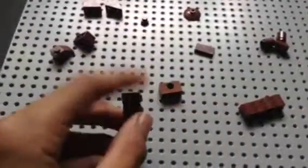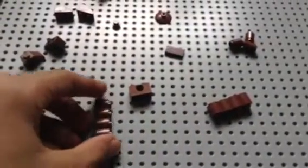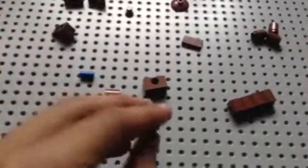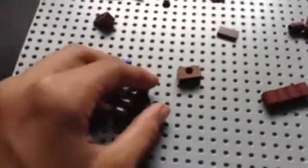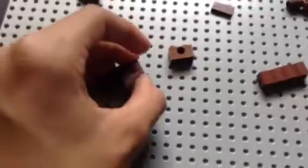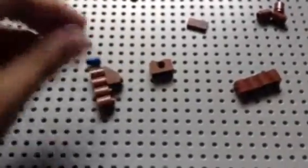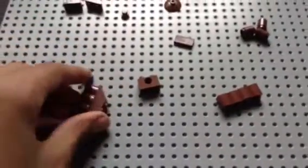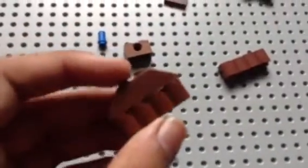So let's start building the table. First we're going to take our one by four. I'm going to take two of these roof tile pieces, slopes, and just stick it on the end just like that.